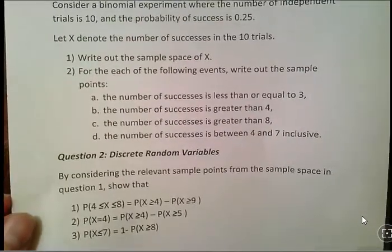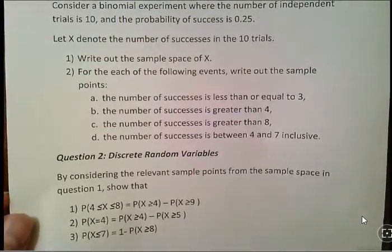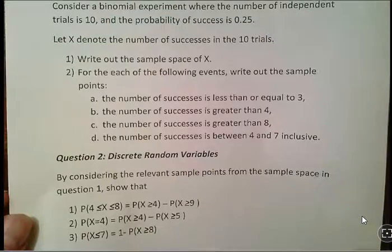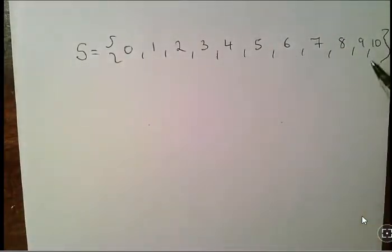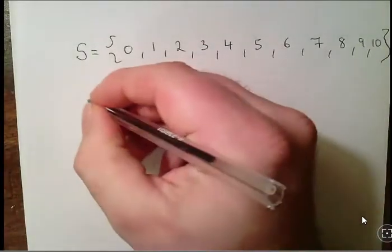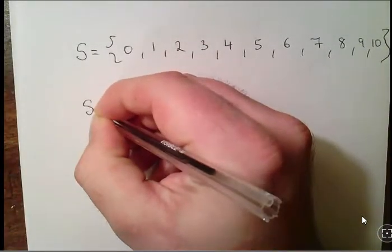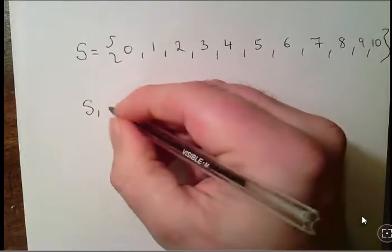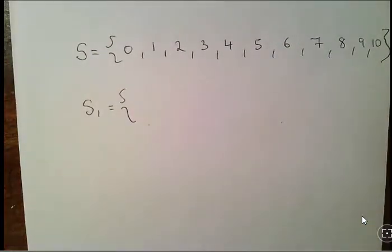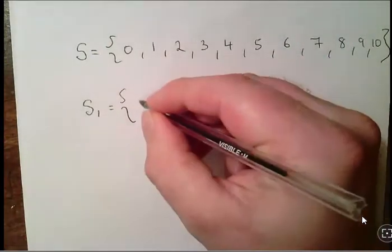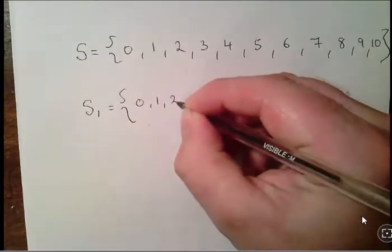For each of the following events, write out the sample points. The sample space is a collection of sample points. In this case, the first thing is less than or equal to 3. So the sample points less than or equal to 3 are 0, 1, 2, and 3.